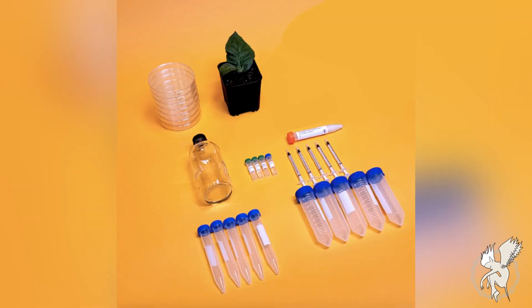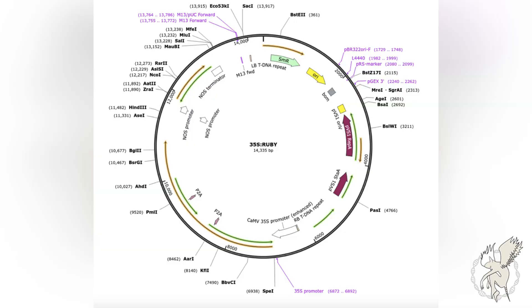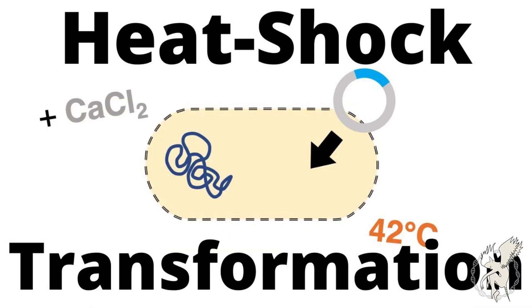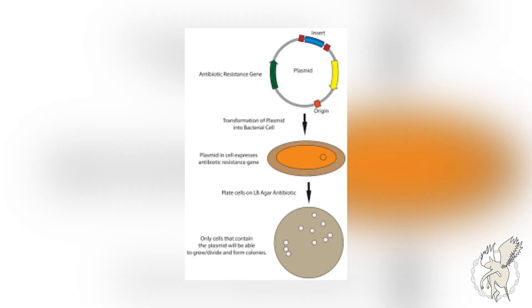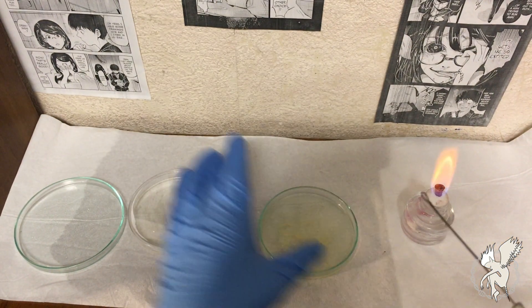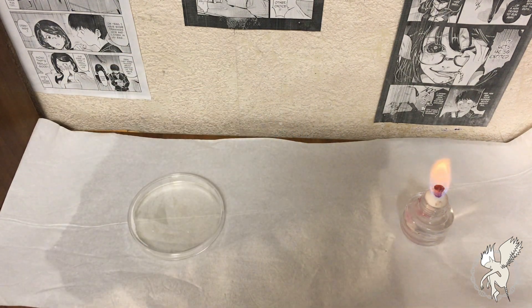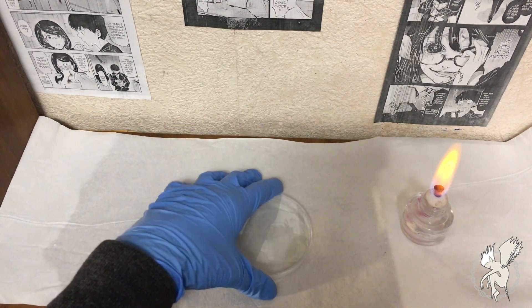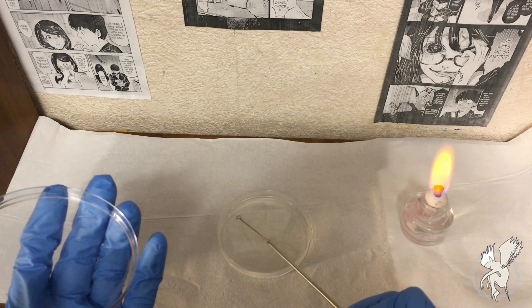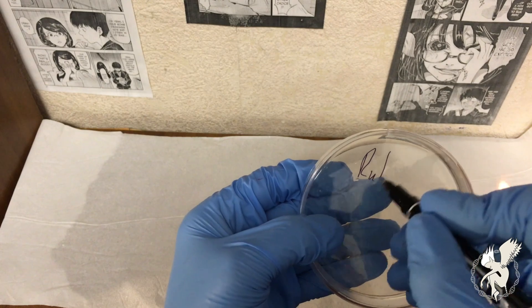When you order the kit from the Odin, you'll receive freeze-dried Agrobacterium ready to use, meaning the genome of interest is already inserted — so you won't have to do any transformation unless you want to deliver an additional plasmid. We want our vector to be as active as possible because when cells are actively dividing, the efficiency of transformation is way higher. To do this, I'm replating my pre-cultured agro plate and waiting one or two days for it to form separate colonies.